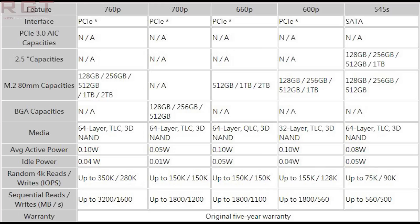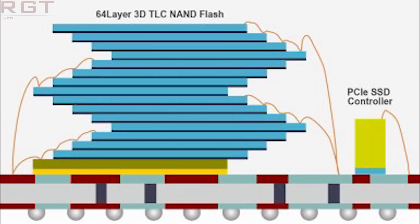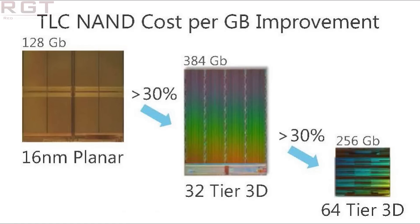For the 660p, random read and write IOPS are both 150,000 — identical for read and write. The sequential read and write speeds are 1,800 / 1,100 megabytes per second, which is still very competitive.